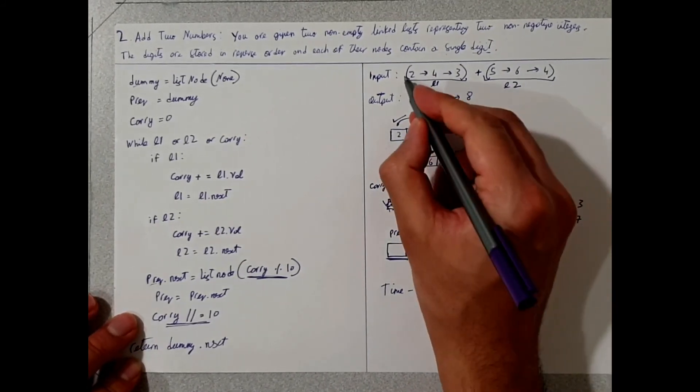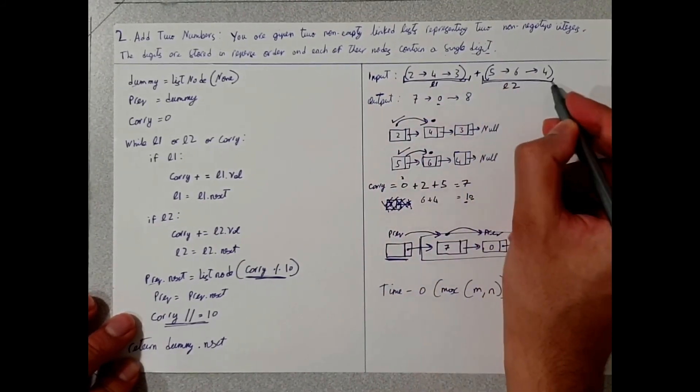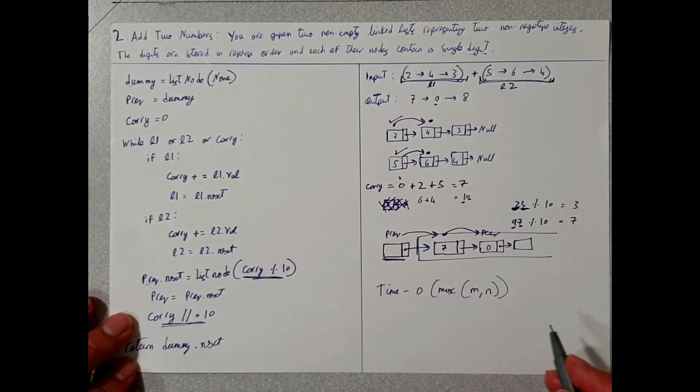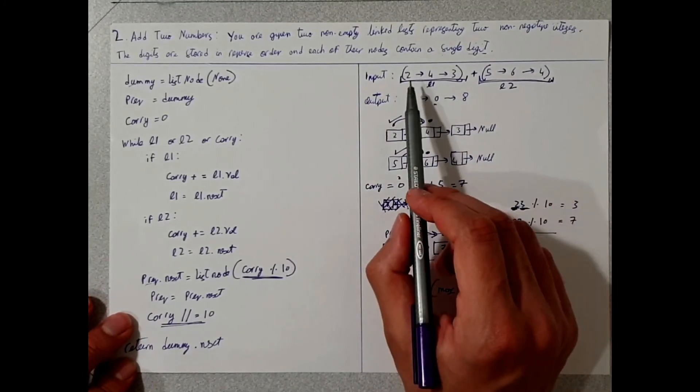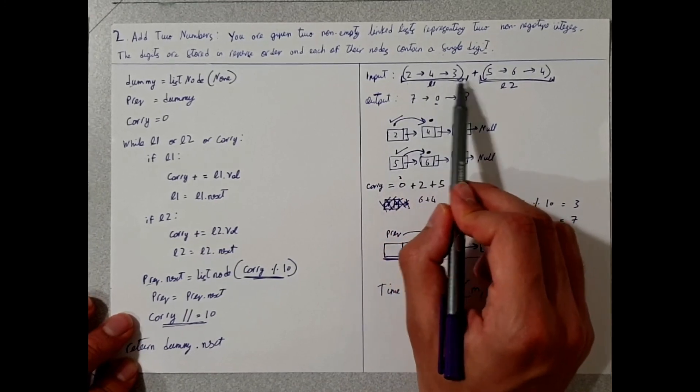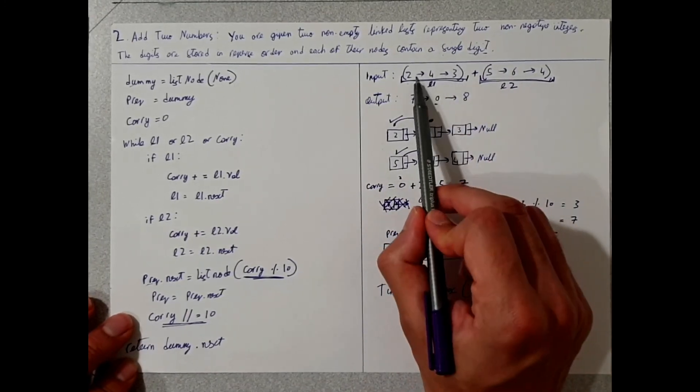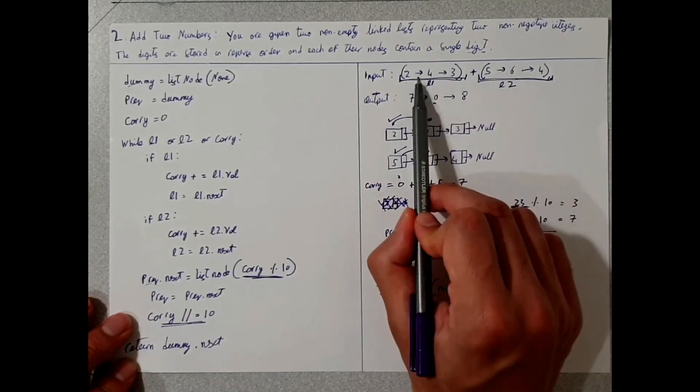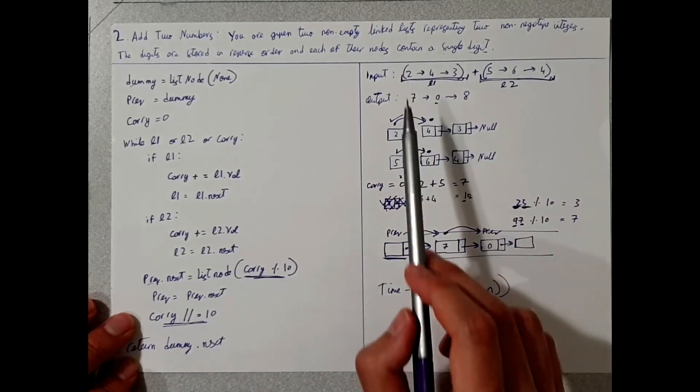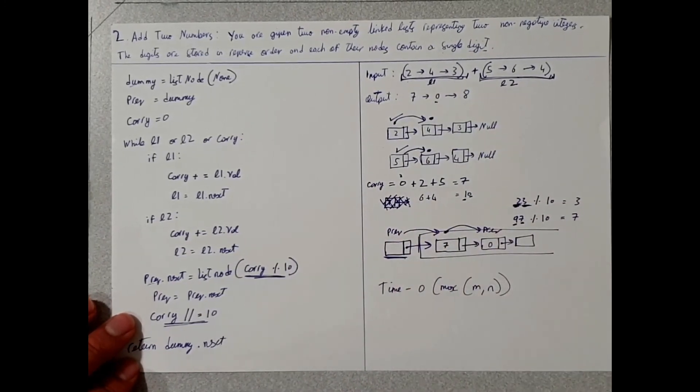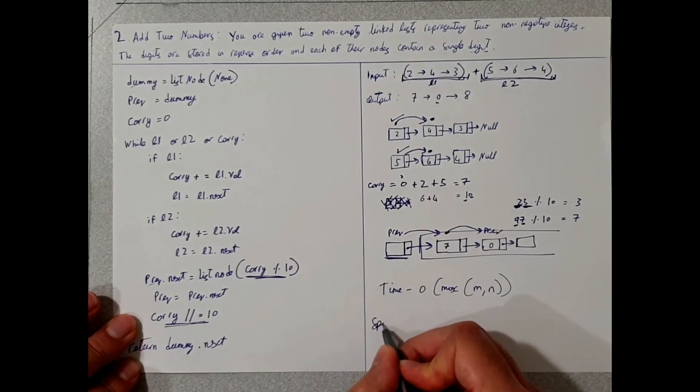The time complexity for this is the max of m or n. So since we have two inputs, two linked lists, the max time complexity will be the number of times we have to iterate through this. So basically the bigger one. So if this had 20 values and this had two values, then it will be the bigger one, since we have to touch all the values in the linked node.